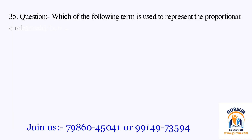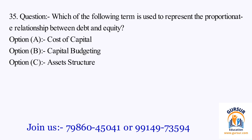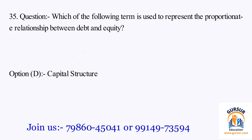Question number 35. Which of the following terms is used to represent the proportionate relationship between debt and equity? Option A: cost of capital. Option B: capital budgeting. Option C: asset structure. Option D: capital structure. The right answer is Option D, that is capital structure.